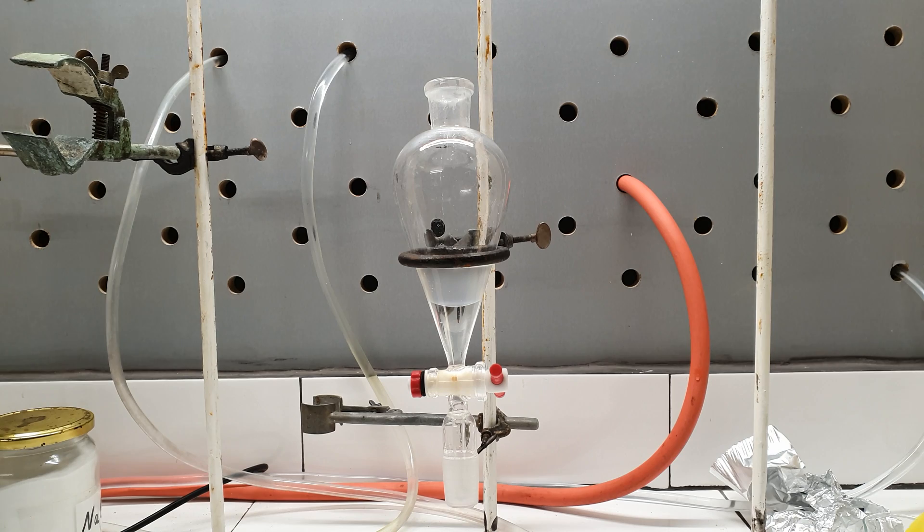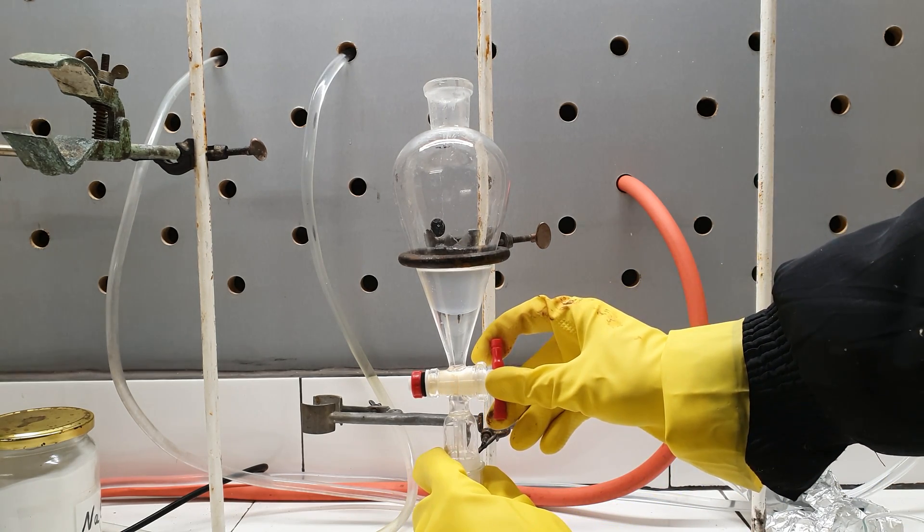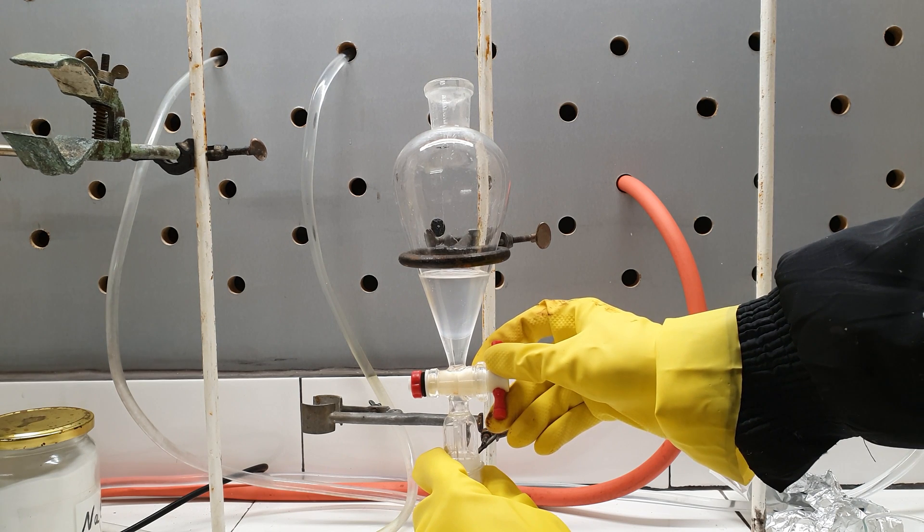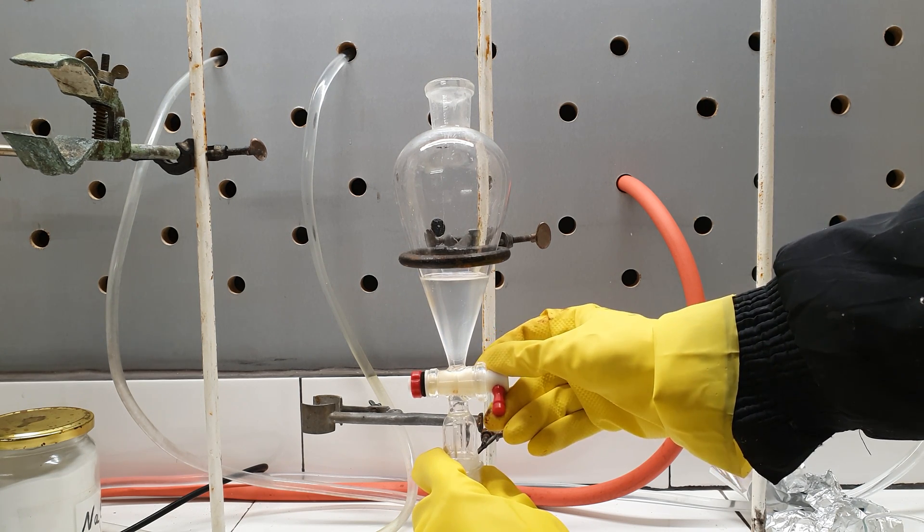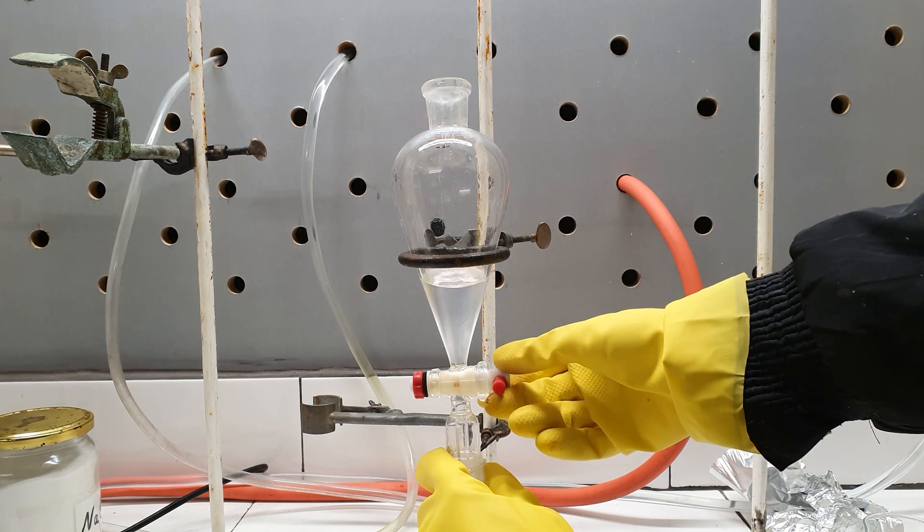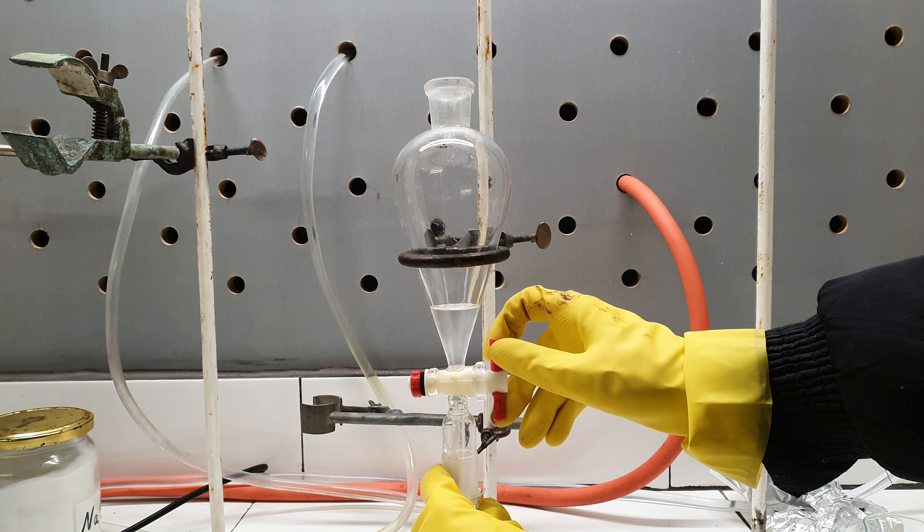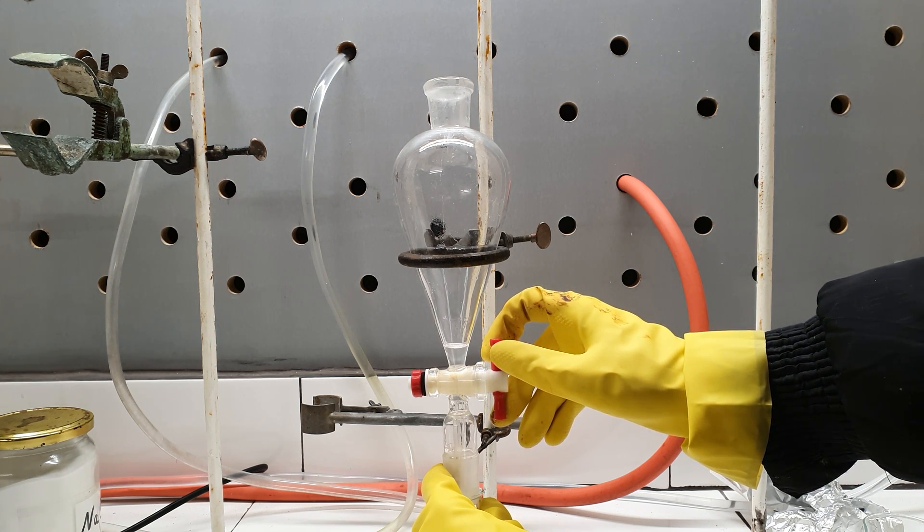Since saturated sodium chloride solution has a lot higher density than water, it is now the lower layer. I drained it and discarded it. The upper nitromethane layer was collected into a 100 ml Erlenmeyer flask.